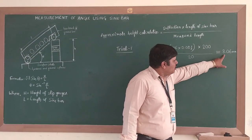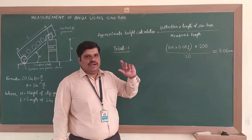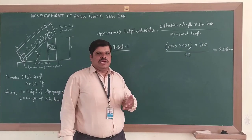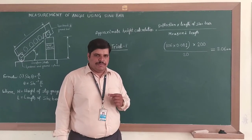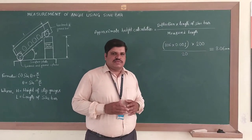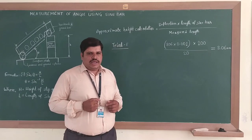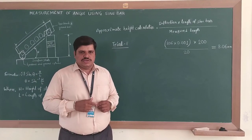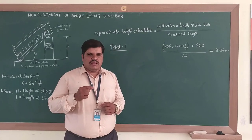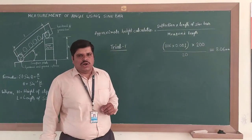Totally 806 divisions were observed while travelling 20 mm. With a least count of 0.001 mm, the total deflection value is 0.806 mm. The sine bar length is 200 mm. So the approximate height is 0.806 × 200 / 20 = 8.06 mm. Earlier we placed a 10 mm slip gauge, so the total height to build is approximately 18.06 mm. We will now proceed to trial 2 for greater accuracy.